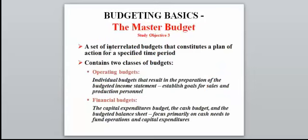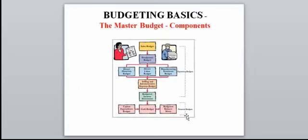The master budget is the combination of all operating budgets plus a financial budget, which involves the cash budget. We won't cover the capital expenditure budget or the budgeted balance sheet — we'll focus on the operating budgets and the cash budget. The master budget starts with the sales forecast at the top. Based on that accurate sales forecast, the production manager determines how much must be produced to meet it.